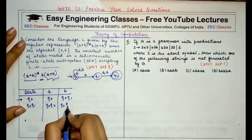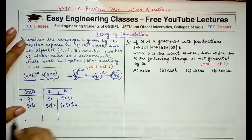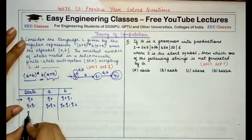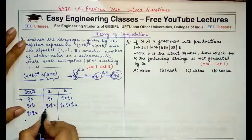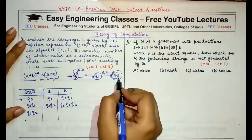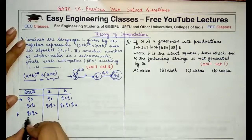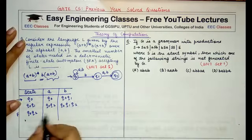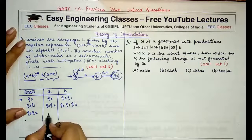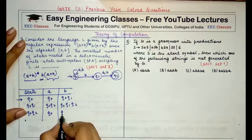And {q0,q1} reading b I will go to {q0,q1,q2}. Now from state {q0,q2}, since q2 is the final state here, {q0,q2} will become a final state. From {q0,q2} reading a I'll only go to q0 and reading b I'll only go to {q0,q1}.